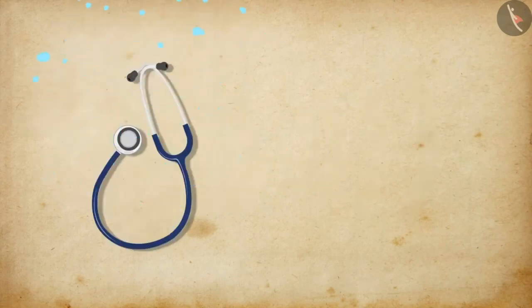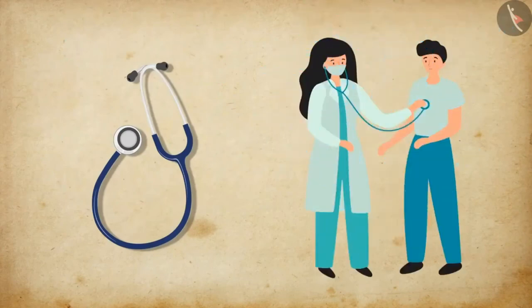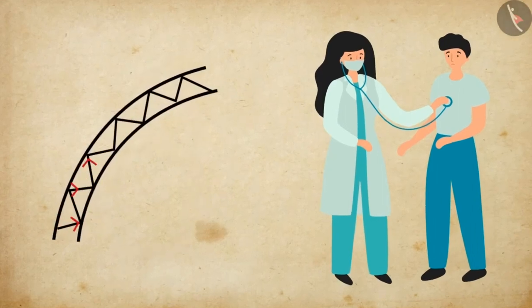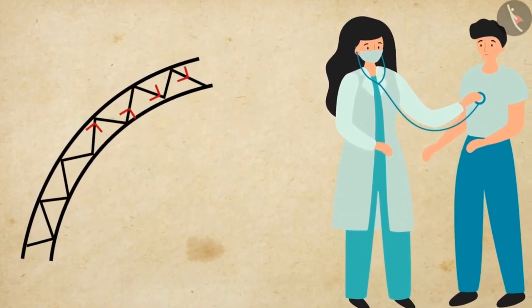A stethoscope, which is used by doctors to listen to the sounds of the heart and the lungs in the human body, is another example of multiple reflections. Here, the sound reaches the doctor's ear after going through multiple reflections.